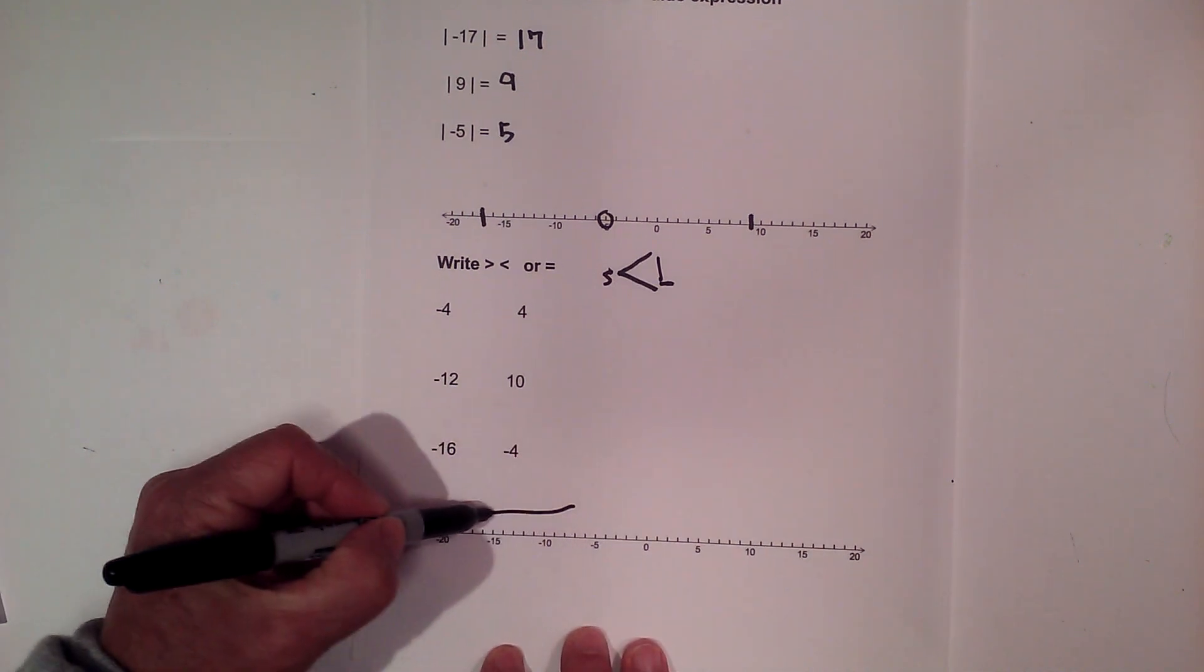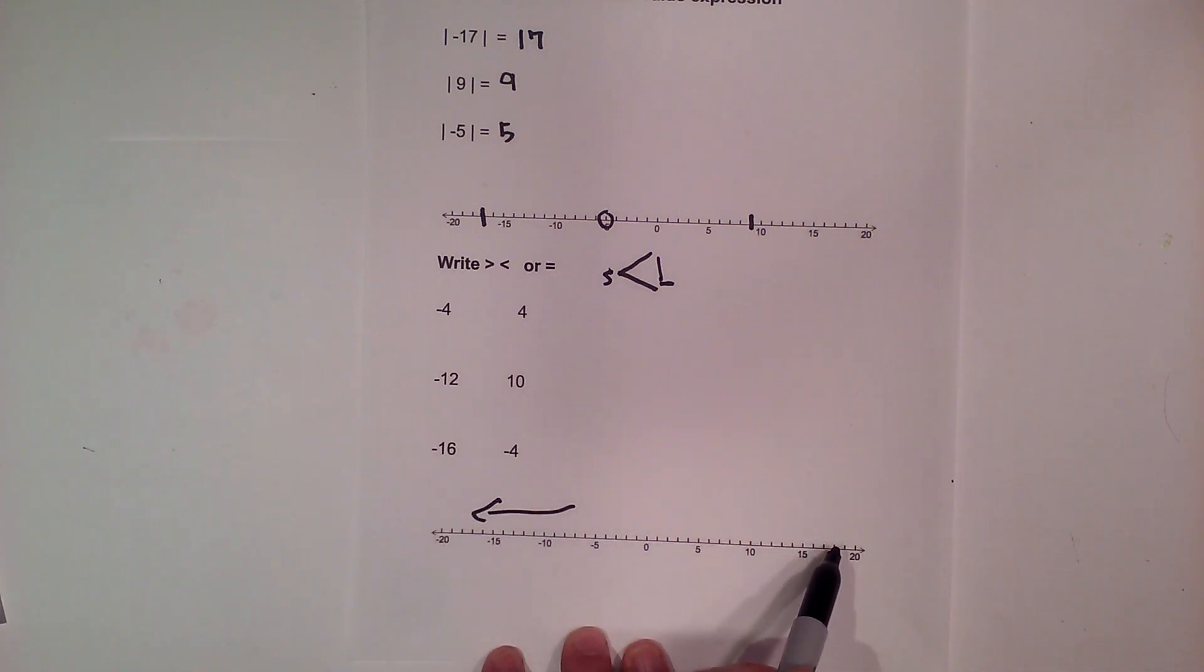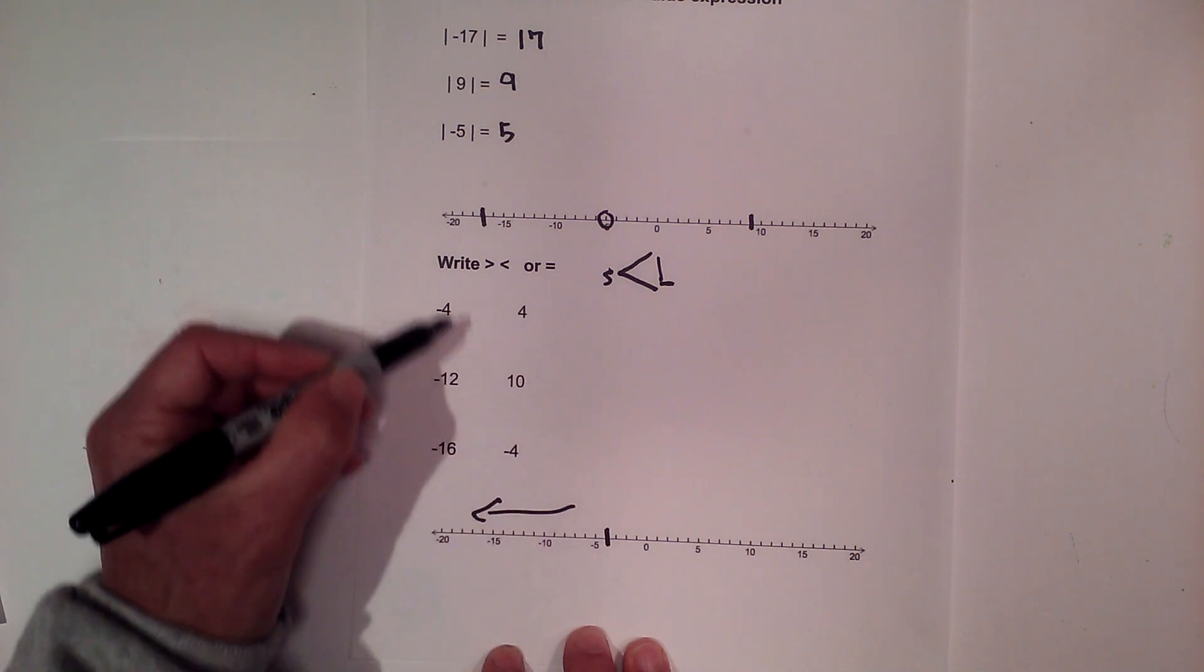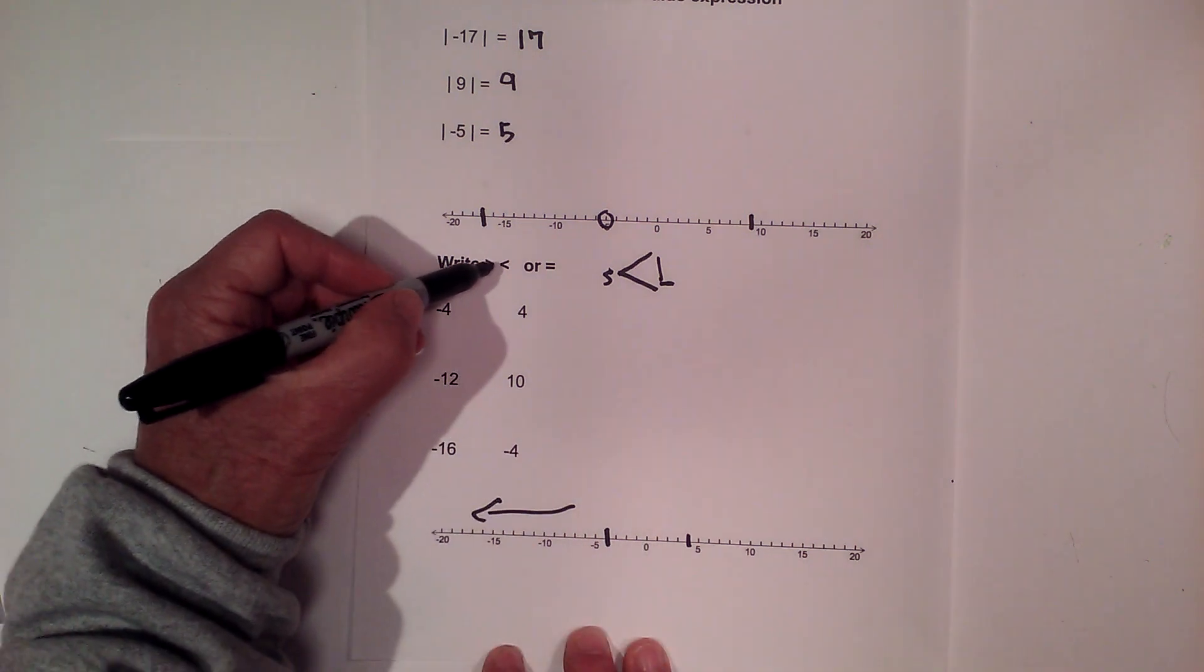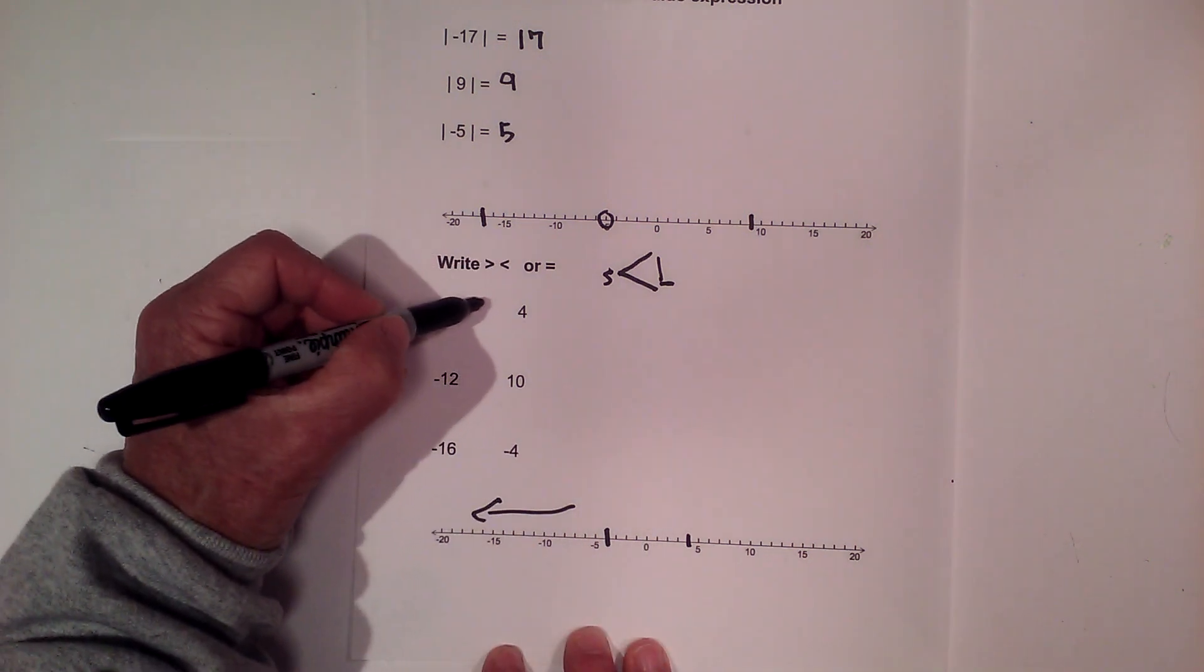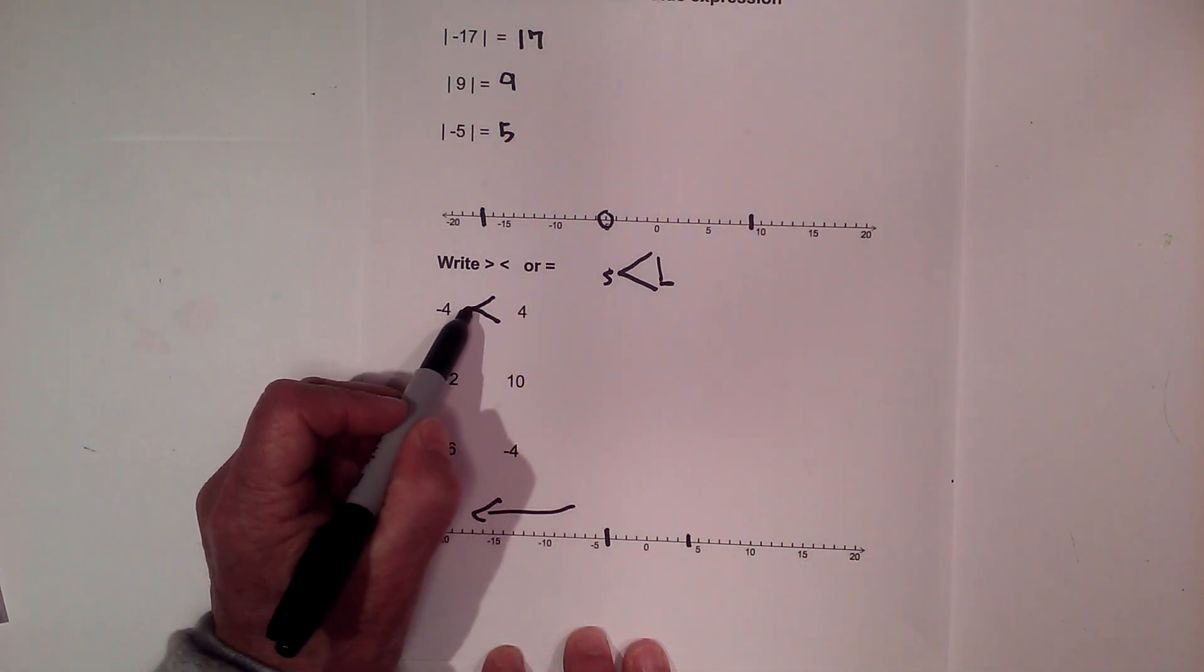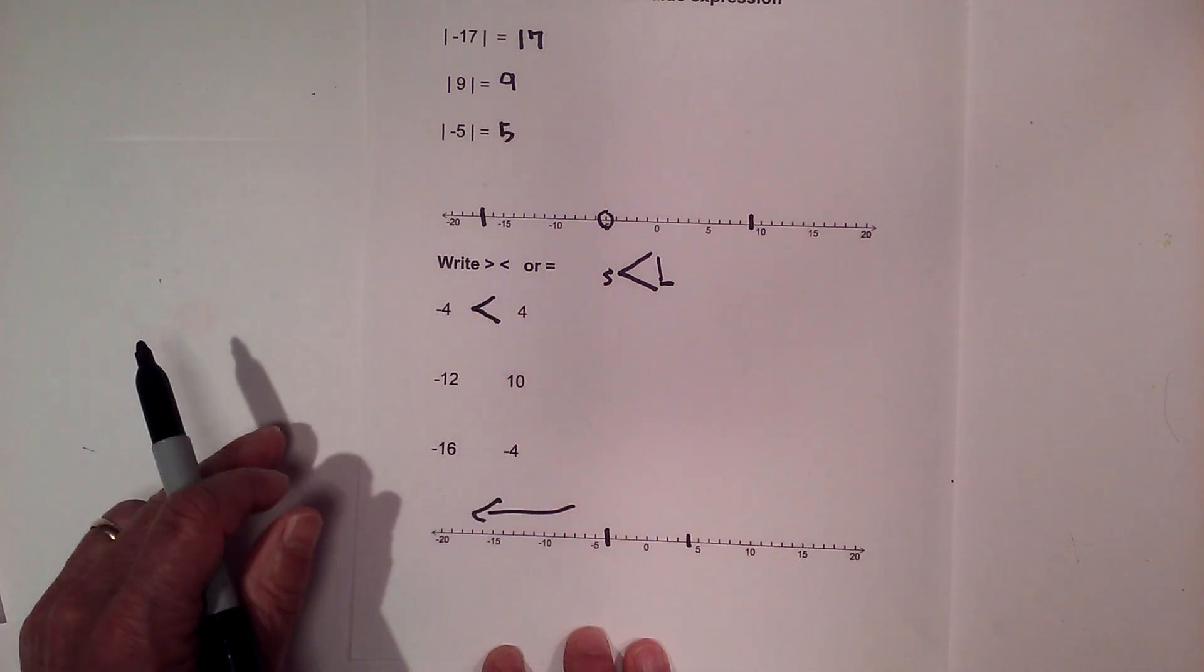And let's use the number line. We know that everything in this direction on the number line is smaller than numbers on this way. We have negative 4 here, and we have 4 right there. Negative 4 is further in this direction, so it's smaller than positive 4. So I'm going to write negative 4 is less than 4. Notice the smaller end is pointing towards the smaller, and this is pointing towards the larger.